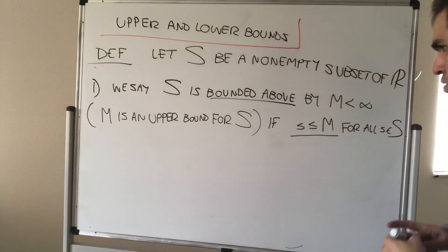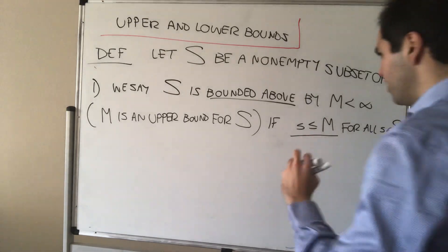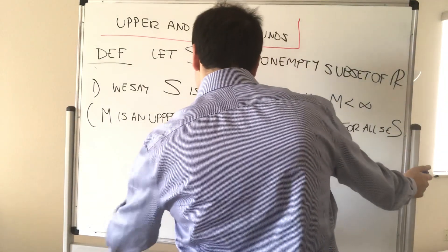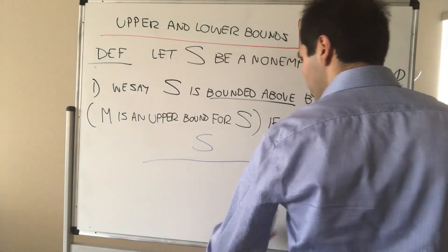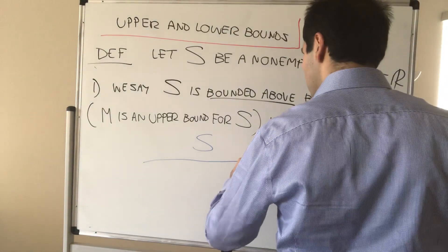So, here's a good example of a set that's bounded above. It looks like this. Think of a half-infinite interval. What bounded above means is it just has a ceiling.